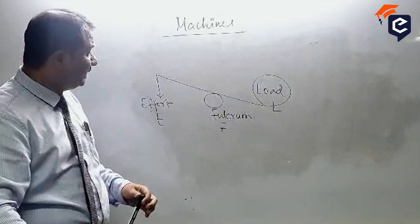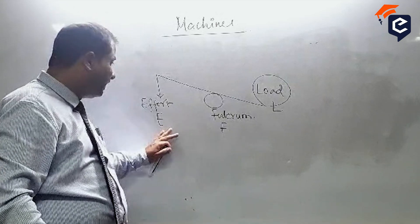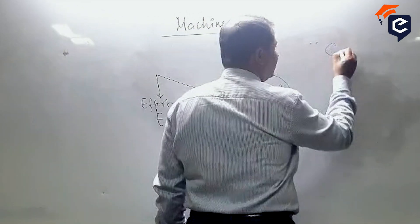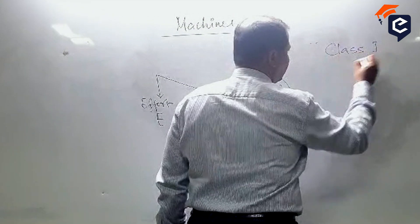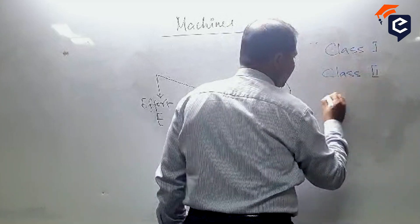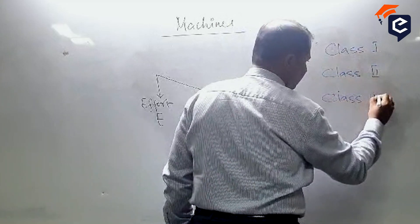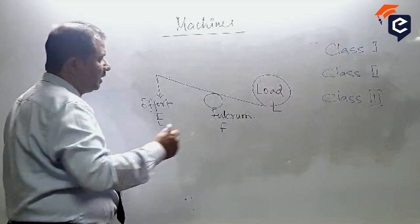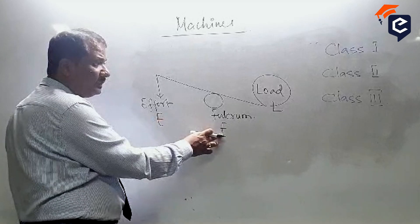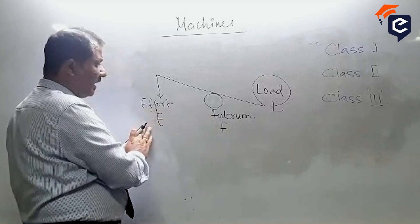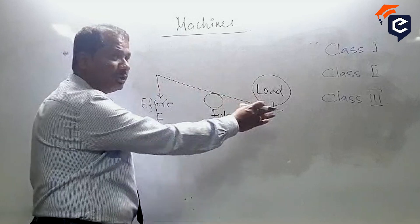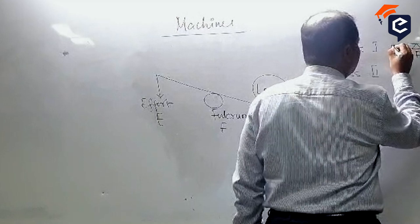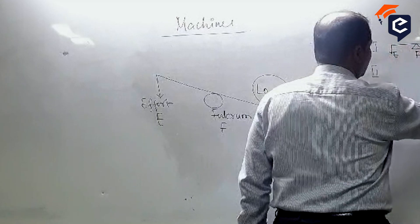Now, depending upon the position of E, F, and L, we have different classes of levers: Class 1, Class 2, and Class 3. Class 1 is when the fulcrum is in the center, effort on this side and load on the other side. So fulcrum here, effort here, load here.